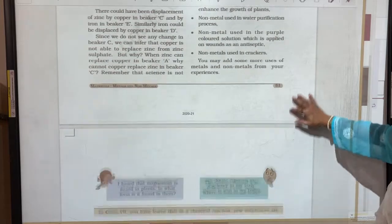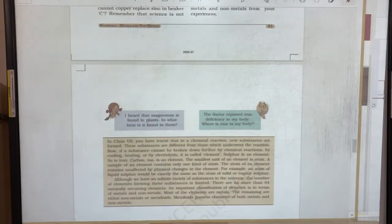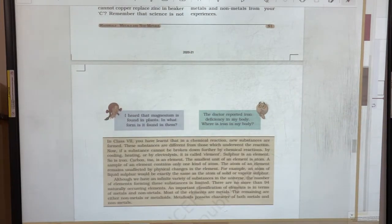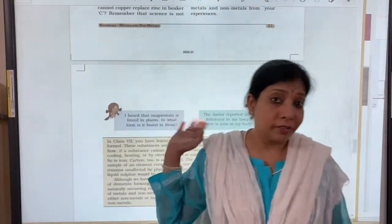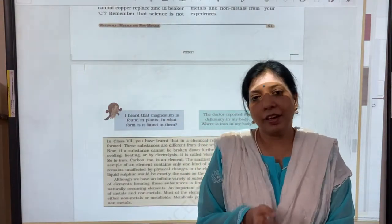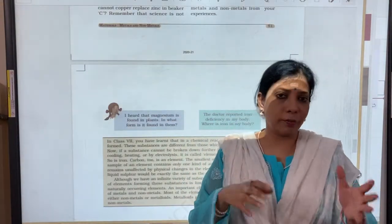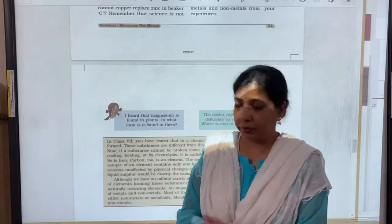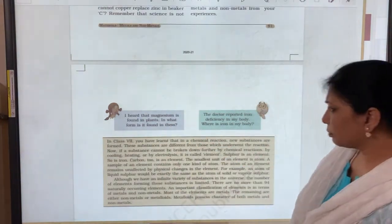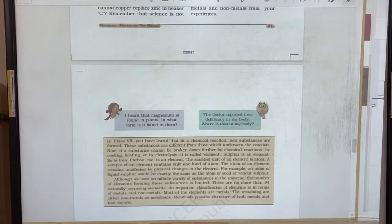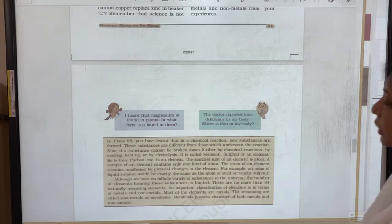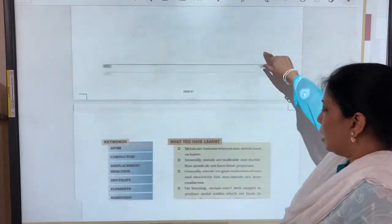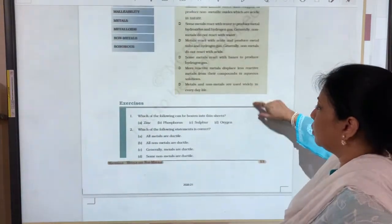So with this we finish off this chapter and there are certain doubts like the doctor reported iron deficiency in my body, where is this iron in my body? Of course we need to tell that iron is present in our blood in the RBC for making the hemoglobin. And magnesium is also found in the plants. They absorb it through the soil as a form of the manure. So with this children we finish off this chapter.